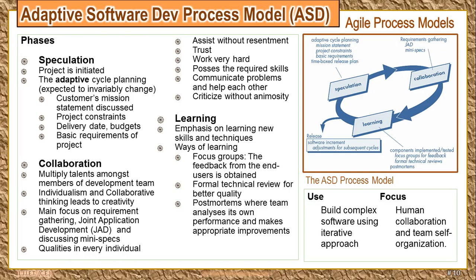To summarize the ASD process: it starts with speculation, where you have an adaptive cycle discussing all the statements, constraints, requirements, and release plan. After deciding this, there is collaboration in the team — doing requirement gathering and a joint application development process by discussing every minute detail. After that comes the learning phase, where they take customer feedback, reviews, and postmortems. Based on that, if any changes are found, the whole cycle goes on again. After completing this cycle, they release the software to the client, resulting in a better quality product.